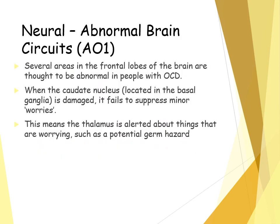Neural explanations can also be broken down into abnormal brain circuits and structure. Several areas within our frontal lobe are thought to be abnormal in people with OCD. The caudate nucleus, located within the basal ganglia, if damaged, fails to suppress minor worries, meaning our thalamus is alerted to things it wouldn't normally be alerted to. This causes anxiety about things — such as potential germ hazards — that are normally filtered out but in a person with OCD reach the thalamus and trigger anxiety and stress.